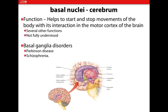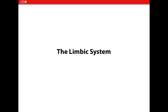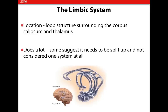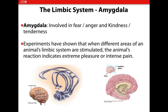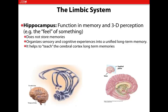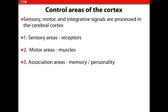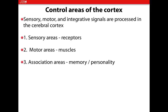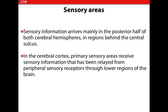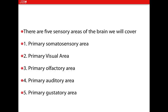Basal nuclei — just know the definition. The limbic system — know the function of the limbic system. Now, the functional areas of the brain: we've already talked about these when we discussed the gyrus — the precentral and postcentral gyrus. Now we're going to talk about them not as a location but as a function.